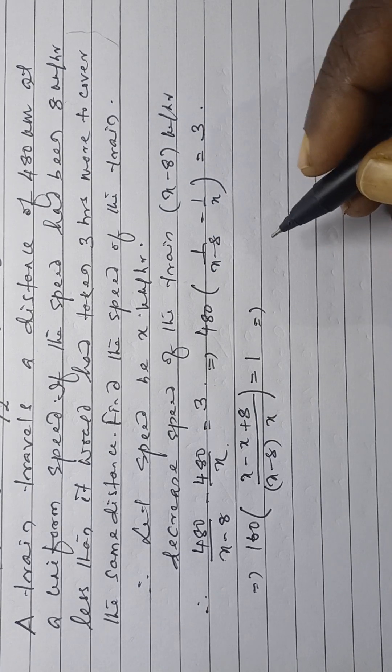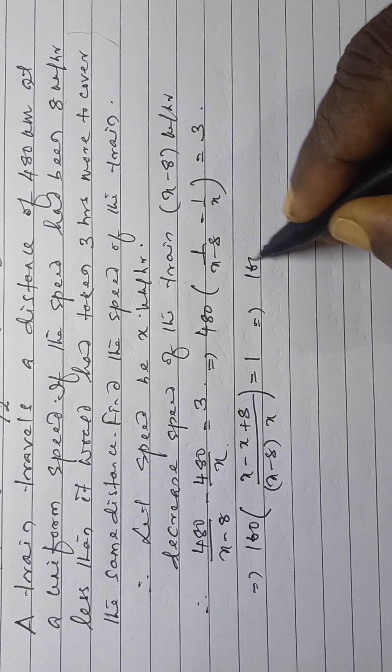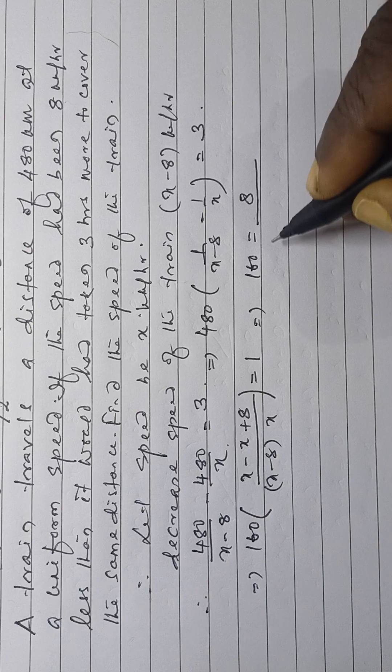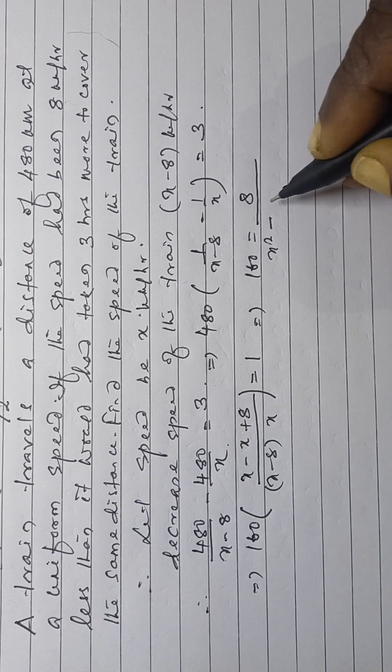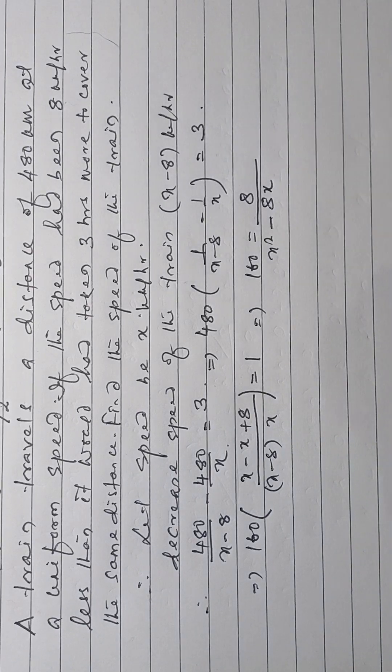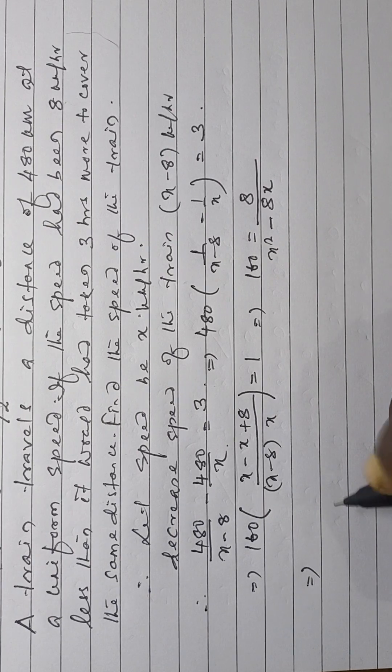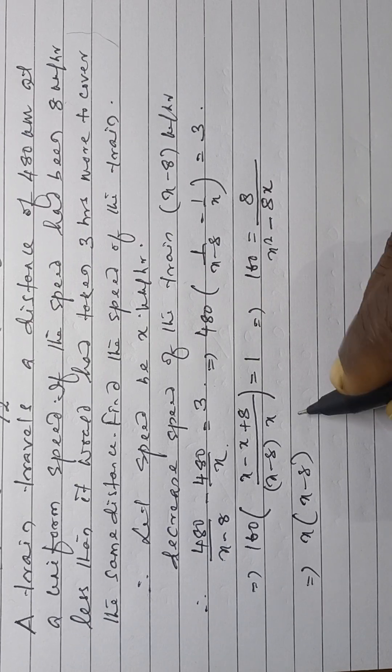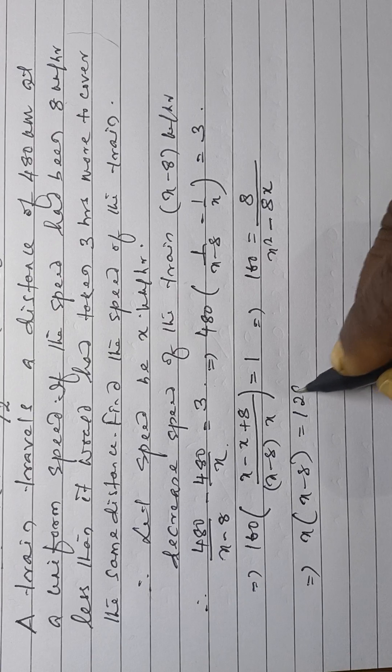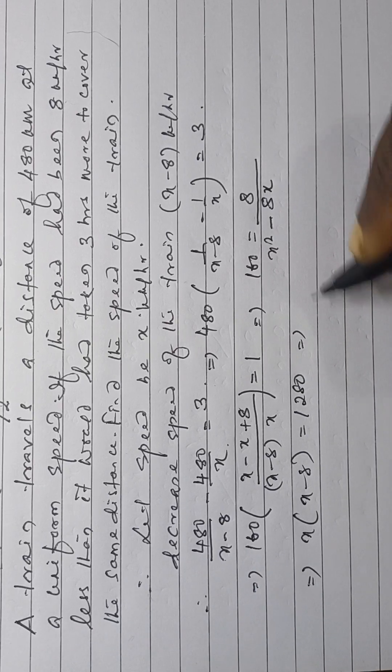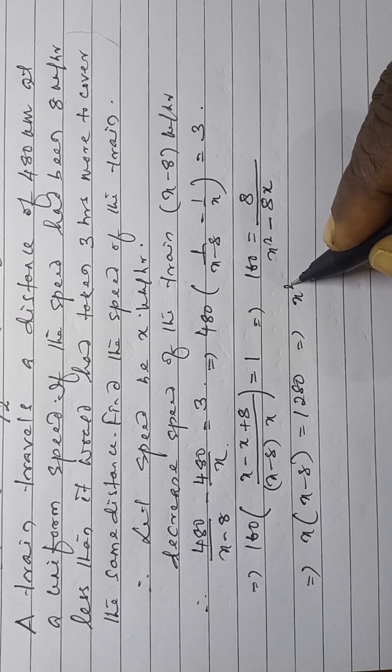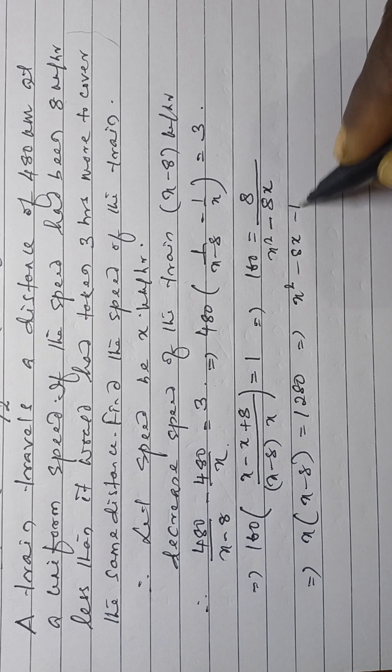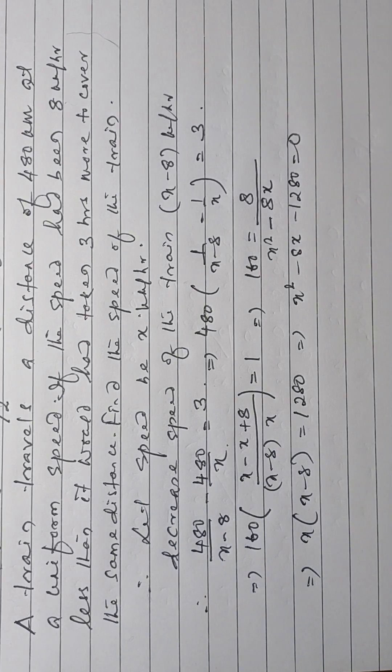Then, this is now 160 into 8 divided by x square minus 8x. So x square minus 8x minus 1280 is equal to 0.